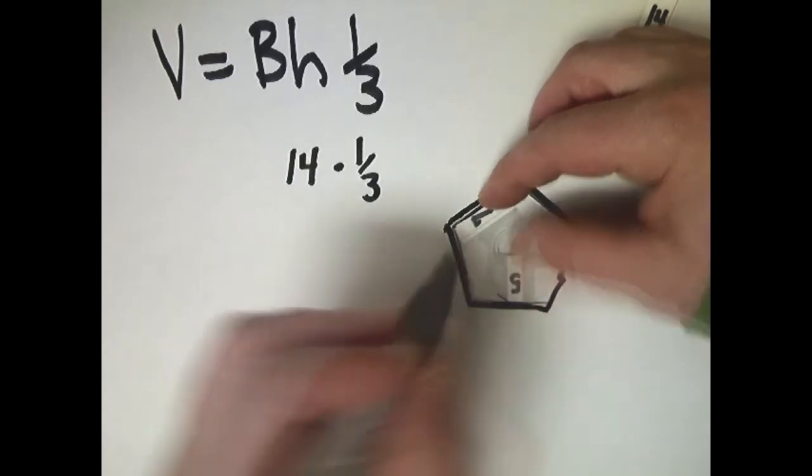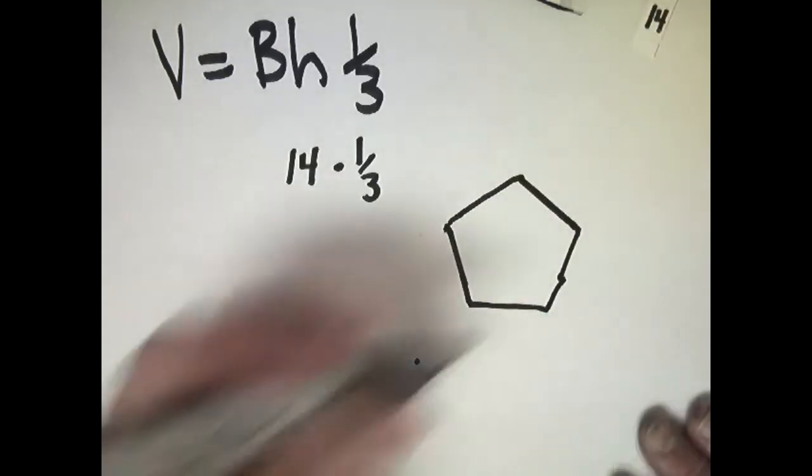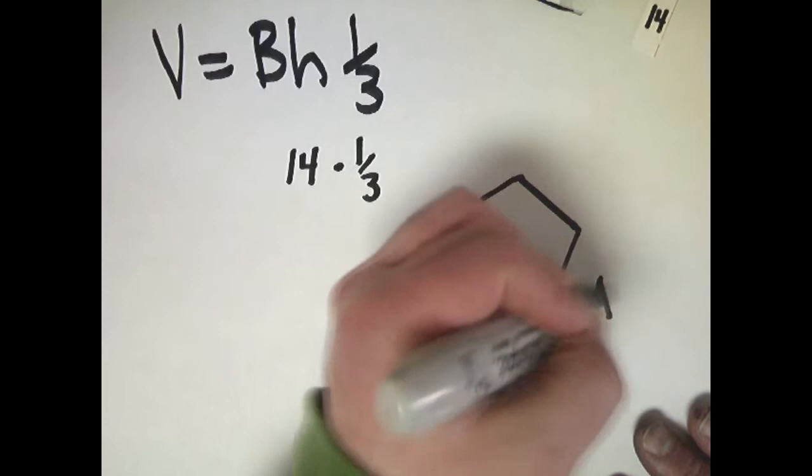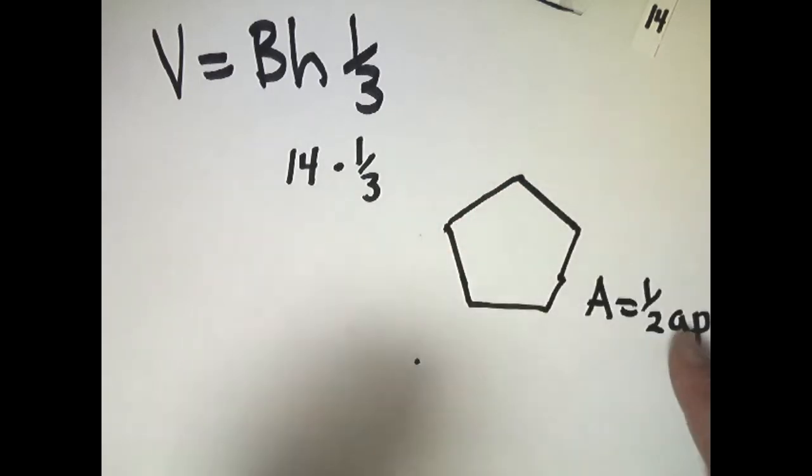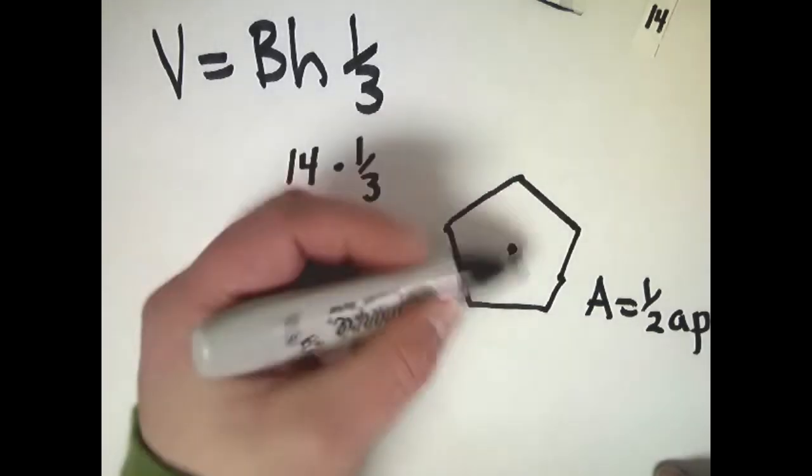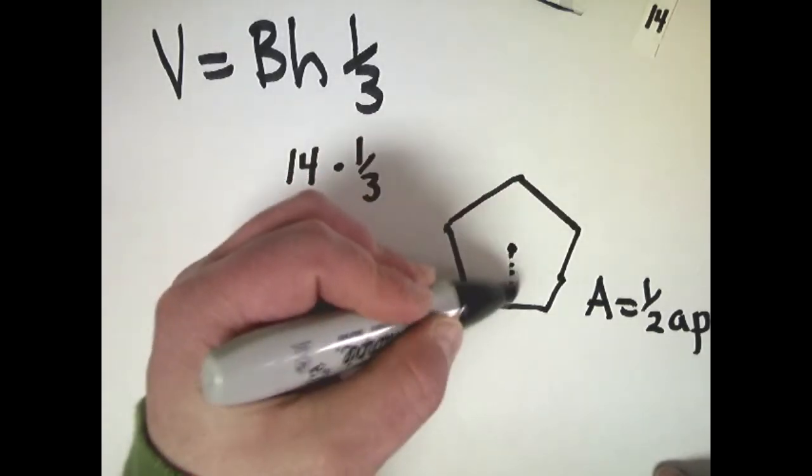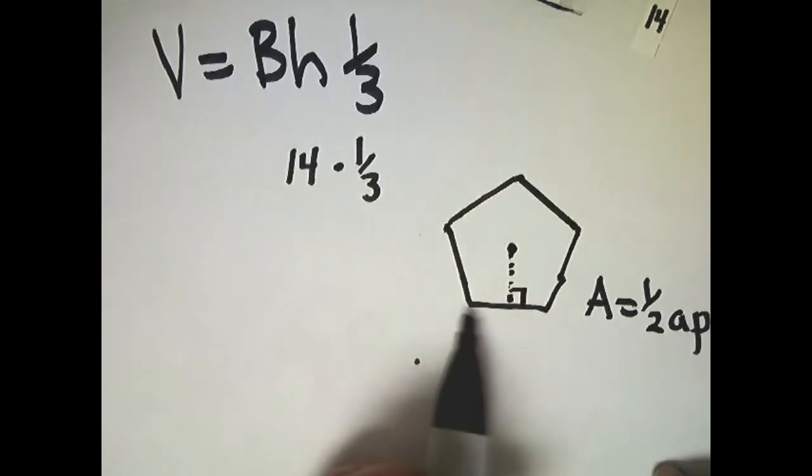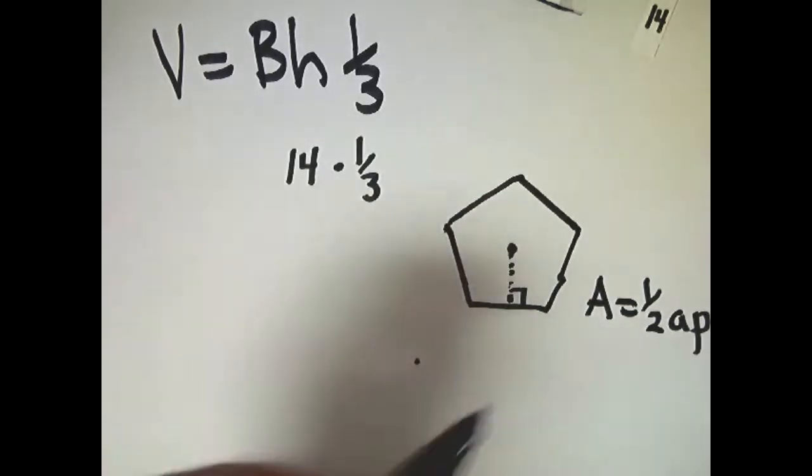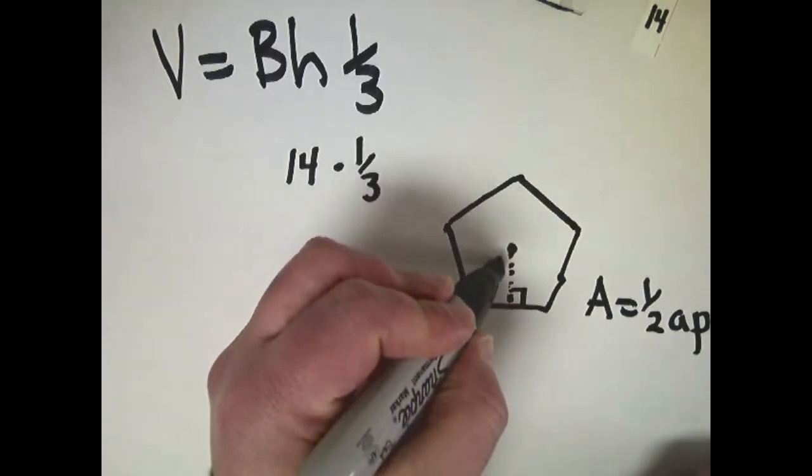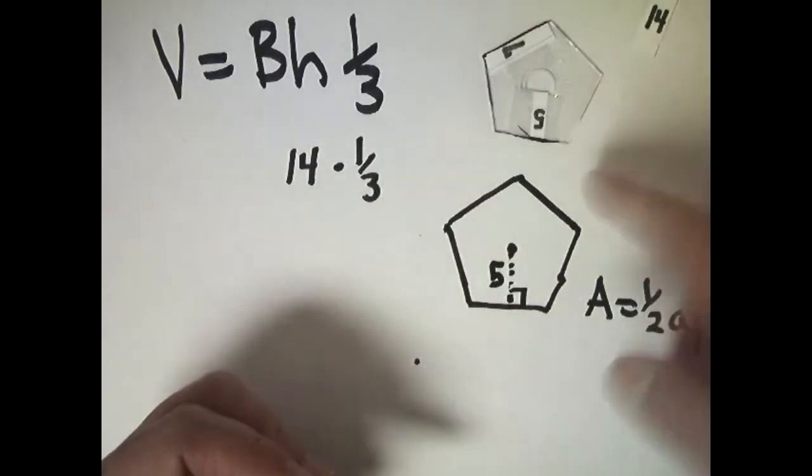And there's a couple ways that you can do it. One of which is to use the formula for a regular polygon, which is area equals one-half apothem times perimeter. Apothem would be the distance from the center of the figure that makes a nice right-angle intersection with this line, so it perpendicularly bisects it, more or less.